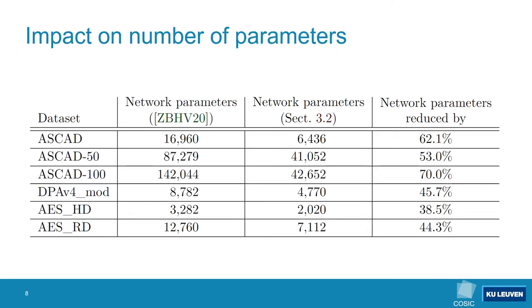Our experiments demonstrate that the first convolutional layer can be omitted if a proper preprocessing strategy is applied. Not only do we obtain networks that perform as well as the original models, we also obtain more stable results over multiple splits of the training data. Compared to some of the earlier works on machine learning based side-channel analysis, the models used by Zaid et al. do not contain a lot of trainable parameters. However, as an added benefit, our models in which the first layer is removed contain significantly fewer trainable parameters. This additional reduction could be beneficial when targeting larger datasets.